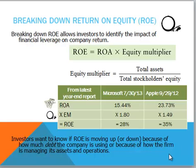Investors want to know if return on equity is moving up or down because of how much debt the company is using, or because of how the firm is managing assets and operations. Remember that debt can also be risky. Microsoft's strengths were its profit margin and use of leverage. Apple's strengths were the total asset turnover, which gave it the higher return on assets and finally the higher return on equity.